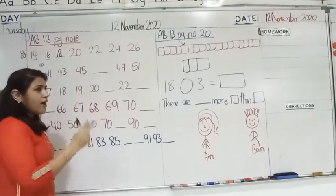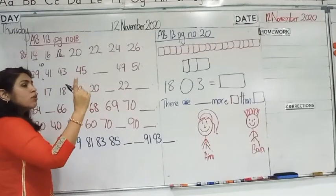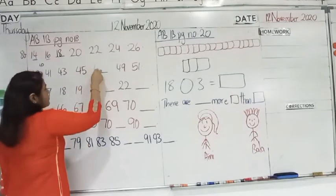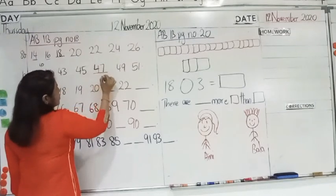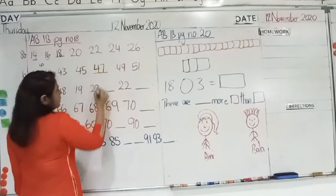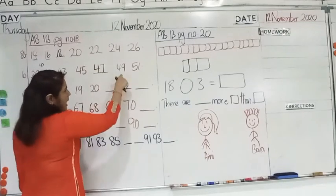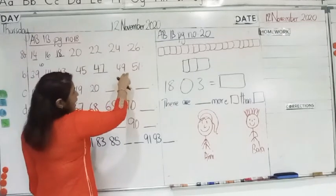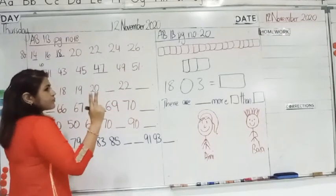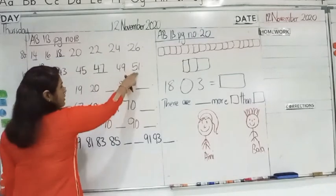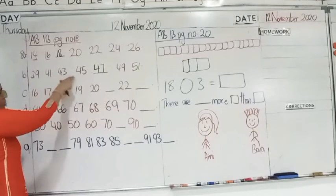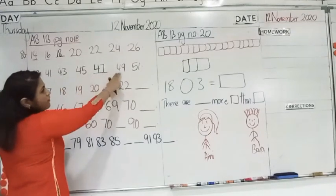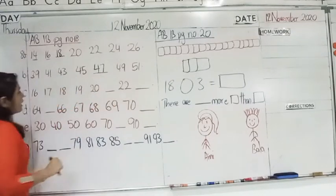Now, focus here. 39, add 2: 40, 41. 41, add 2: 42, 43. 43, add 2: 44, 45. So, if you are standing at 45, count by twos: 46, 47. 47, count by twos: 48, 49. 49, count by twos: 50, 51. So, 39, 41, 43, 45, 47, 49 and 51.